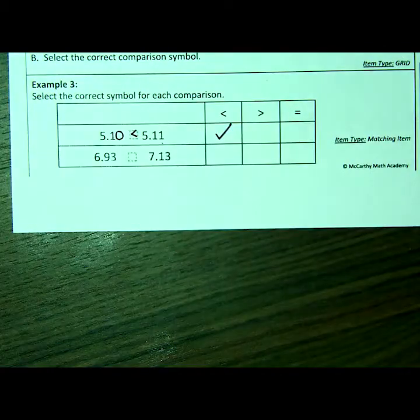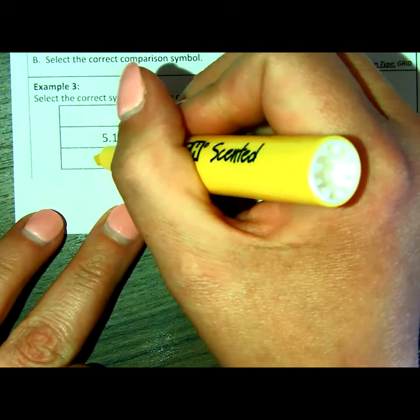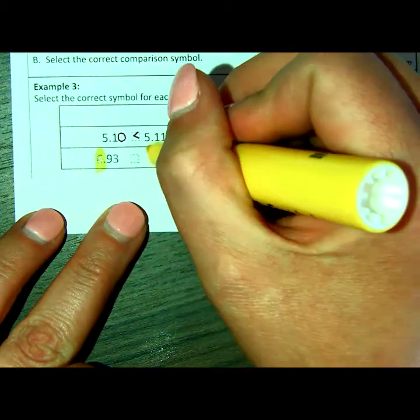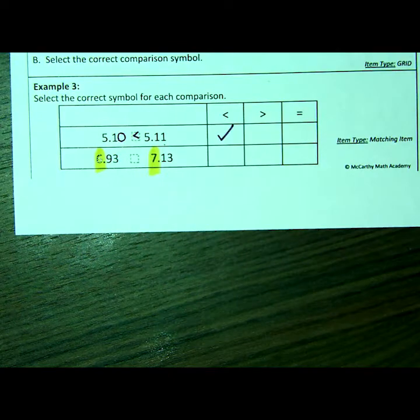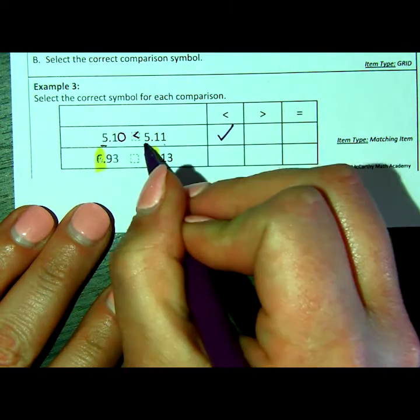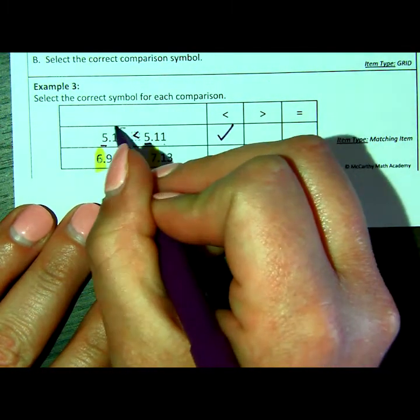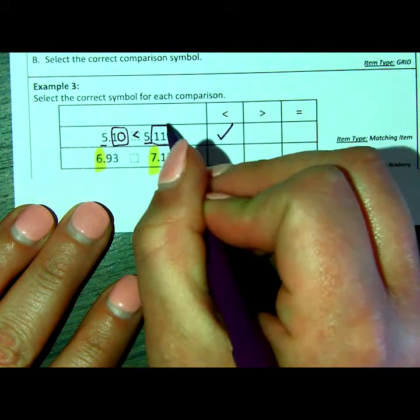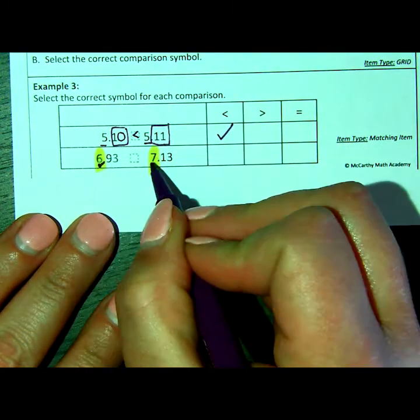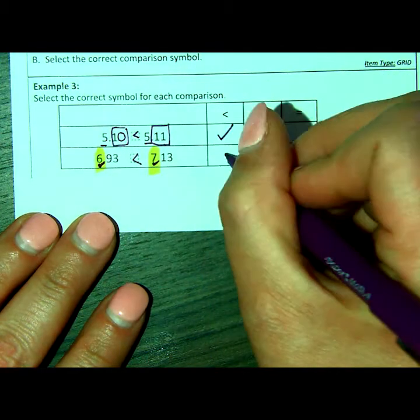Now let's look at this one. Well, with this one, you guys probably noticed right away, you can compare the whole numbers 6 and 7. We couldn't compare the whole numbers here because they were both 5, so we had to look at the decimal places. But in this one, we know 6 is less than 7, so that's automatically going to be less than.